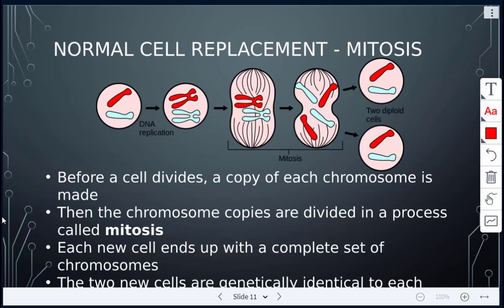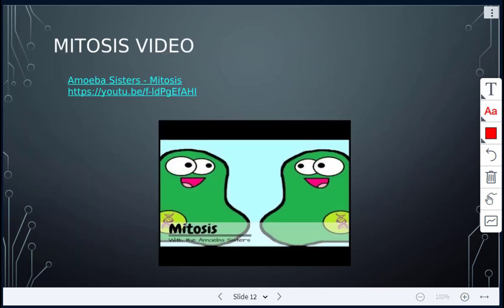The chromosome copies are then divided in the process called mitosis. The videos get very specific about all the phases, but you don't need to know those phases for grade 9. You can see cell division occurring — the cell elongates, starts to pinch off in the middle, and then completely separates. The two resulting cells are called daughter cells, and they are genetically identical to each other and to the original cell.